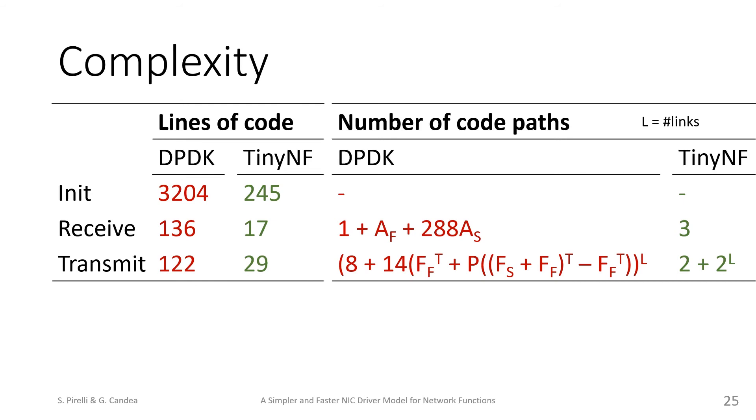Our driver, TinyNF, only has a single digit number of paths. The only variable in our number of paths is the number of output links. Overall, this corresponds to seven times fewer paths in our verified network functions, which we can then verify eight times faster.